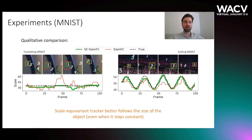We analyze tracking results on the TOI data to investigate the sources of performance gain. The results on scaling Pneest suggest that the scale equivariant model has a superior ability to precisely follow the change of target size. The experiment on translating Pneest shows that our model robustly preserves the size of the object when it stays constant, which is a task that the baseline struggles with.